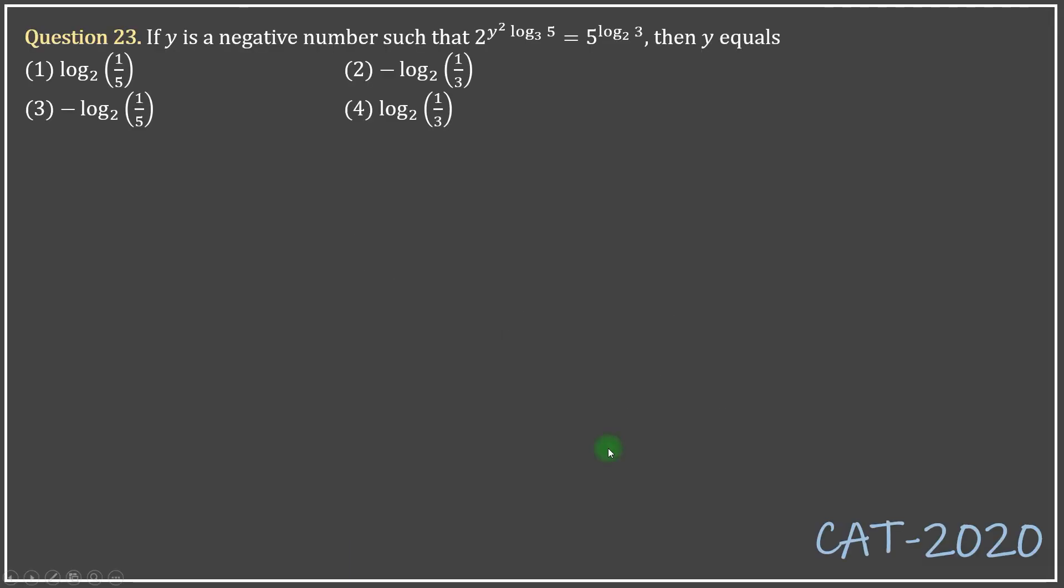Now, if y is a negative number such that 2 to the power y square log 5 to the base 3, now that's a lot to take in. Let me write it this way. Equals 5 to the power log 3 to the base 2.